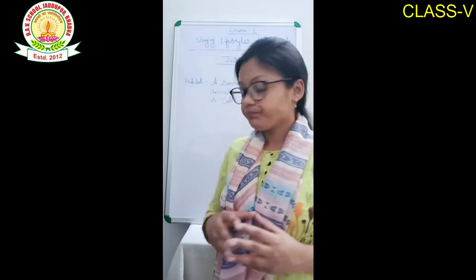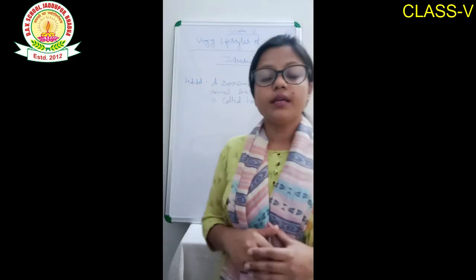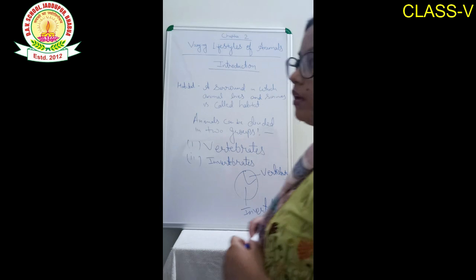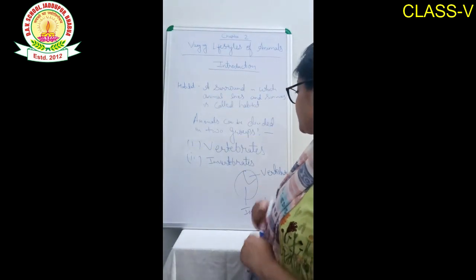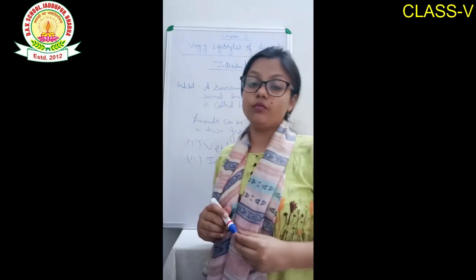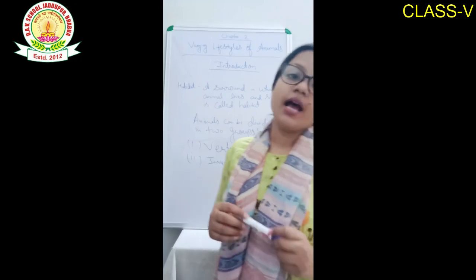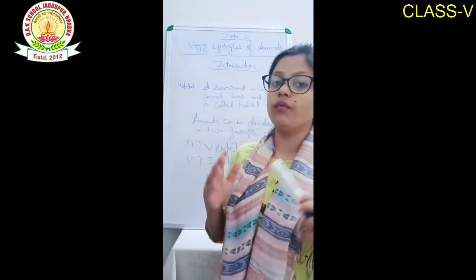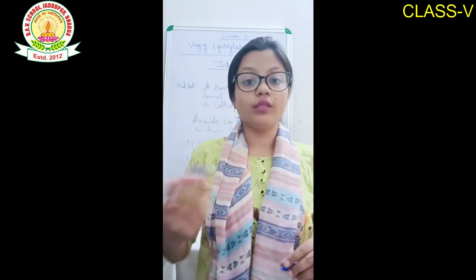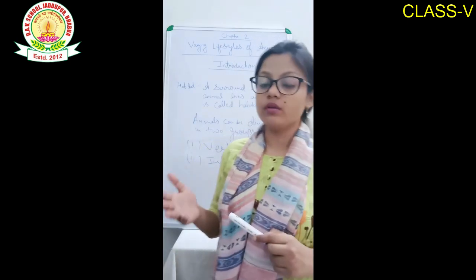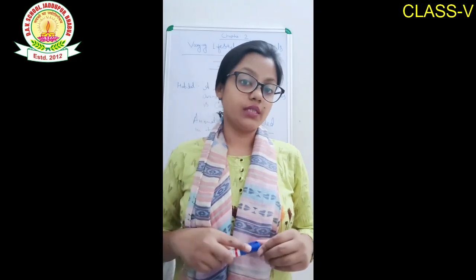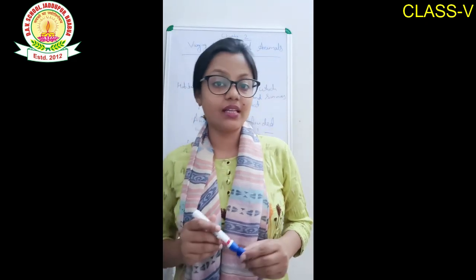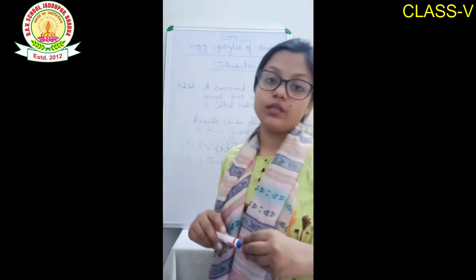Today we are going to discuss how animals can be divided into two groups. First, vertebrate animals, and second, invertebrate animals. Animals that have a skeleton made up of bones are called vertebrate animals. Invertebrate animals are those that do not have a skeleton made up of bones.